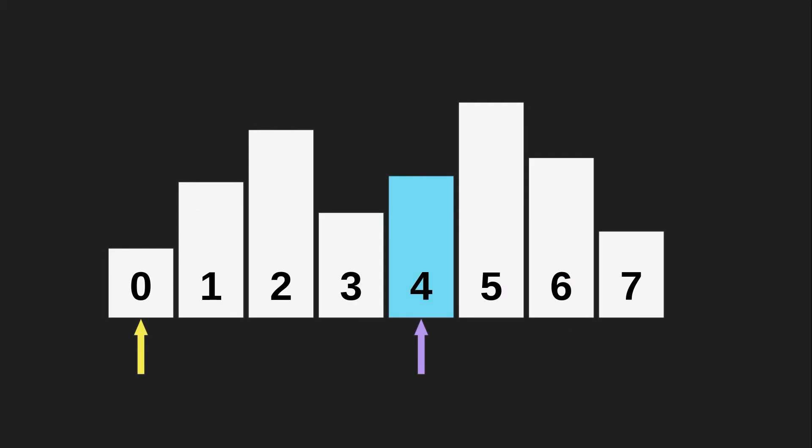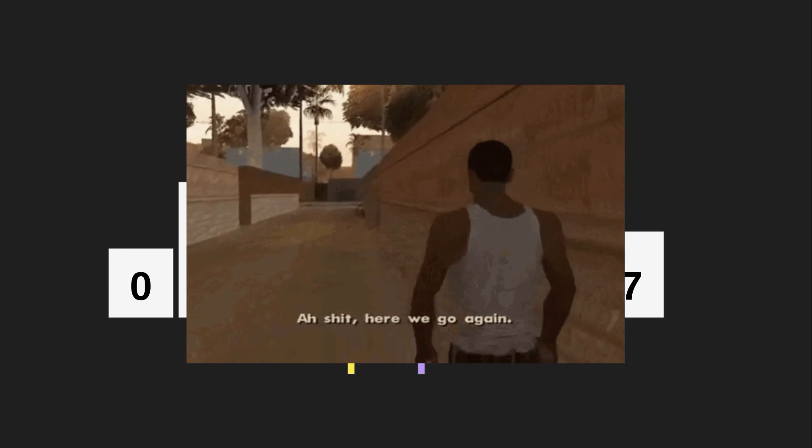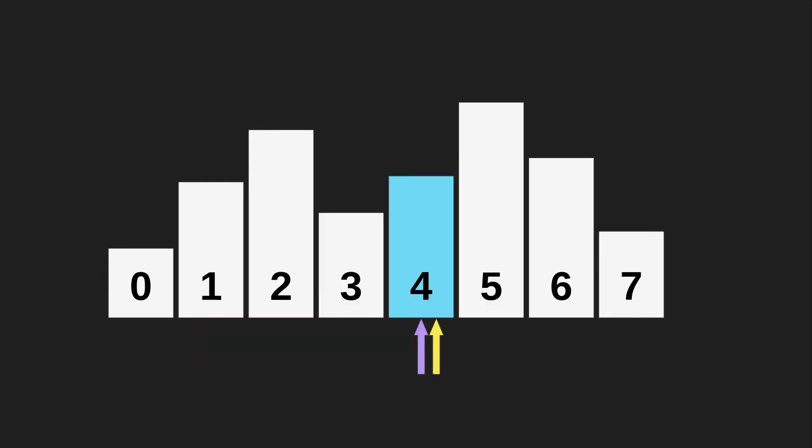Now comes bar four. Bar four is higher than bars zero and one, but smaller than bar two, which means we can extend it into bar two. But then comes bar three — bar three is smaller than bar four, so we can't extend bar four into bar three, and because of that we can't extend it into bar two either. So this approach just doesn't work. We need to find another way.